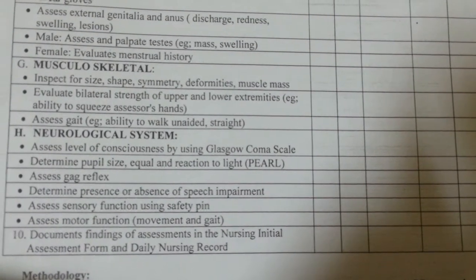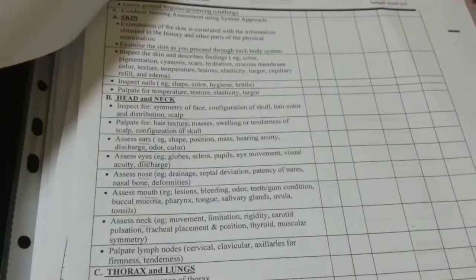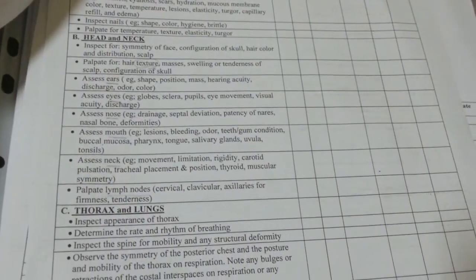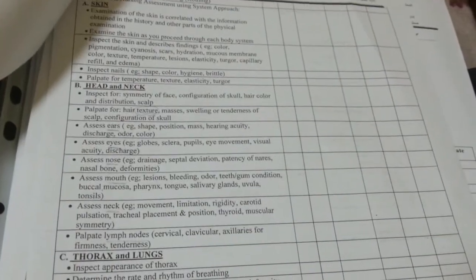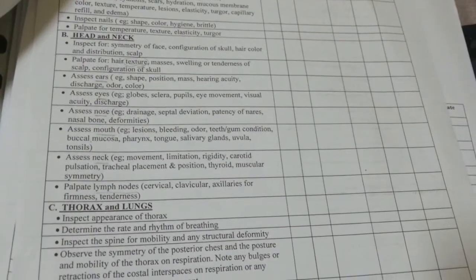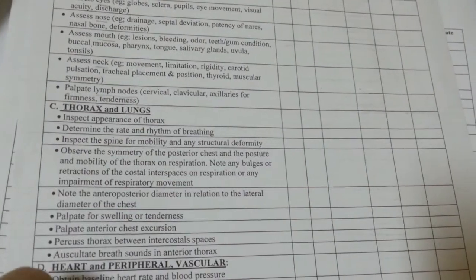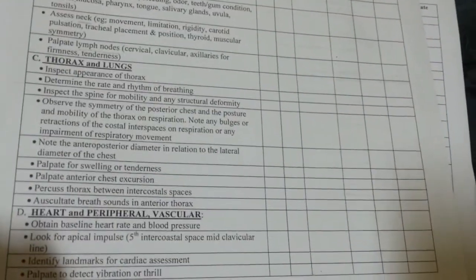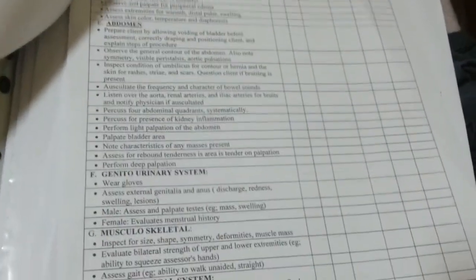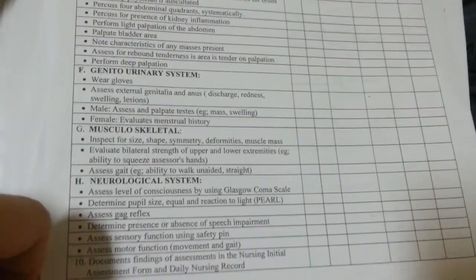Document findings of the assessment in the nursing initial assessment form and daily nursing record. In summary, the assessment covers the skin, head and neck — including ears, eyes, nose, mouth, and neck — thorax and lungs, heart and peripheral vascular system, abdomen, genitourinary system, musculoskeletal system, and neurological system.